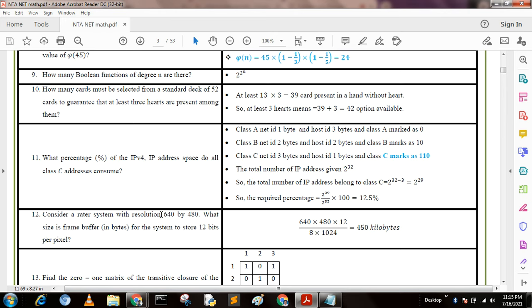We can represent pixels as 640 × 480, and convert to bits: 640 × 480 × 12 bits. Then convert to bytes, then to kilobytes by dividing by 1024, and we get the required answer of 450 kilobytes.